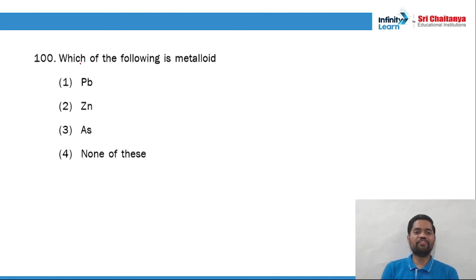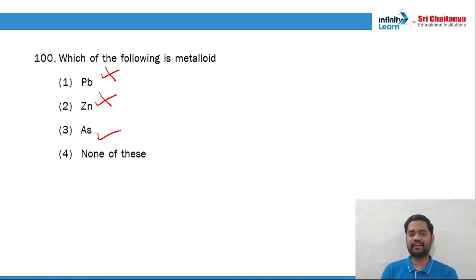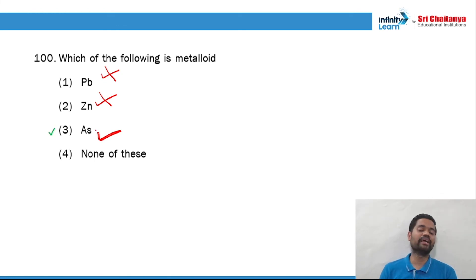Question 100: which of the following is a metalloid? Lead is a metal. Zinc is a metal. Arsenic is a metalloid. Hence option number 3 is the right answer.